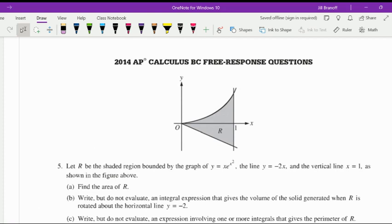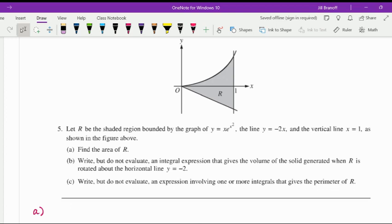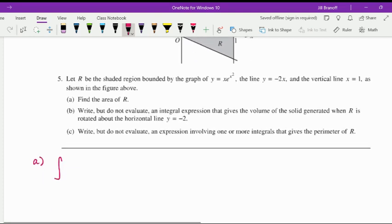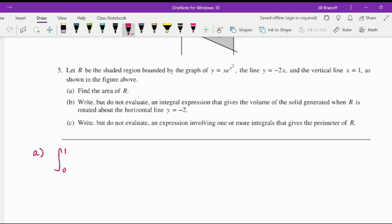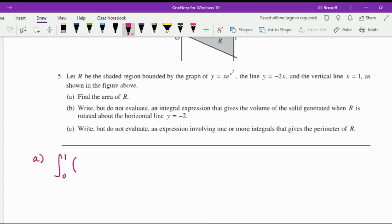In 2014 BC Calculus free response question number five, you can read the stem of the question. You've got that shaded region and in part A you're supposed to find the area. So we want to integrate from x equals 0 to 1 of the top curve minus the bottom curve. The top curve is x e to the x squared minus the bottom curve which is negative 2x, and minus the negative is plus 2x, and we're integrating in x.